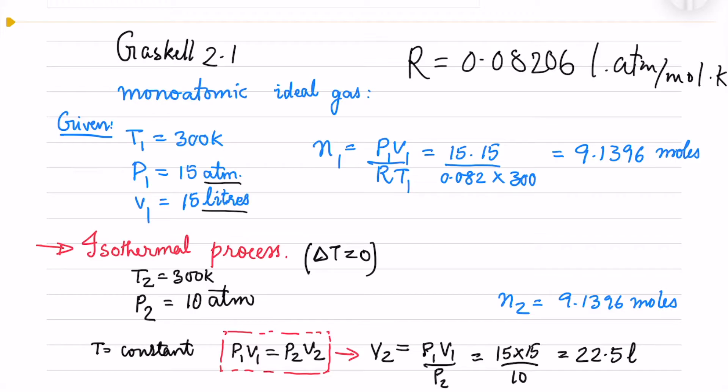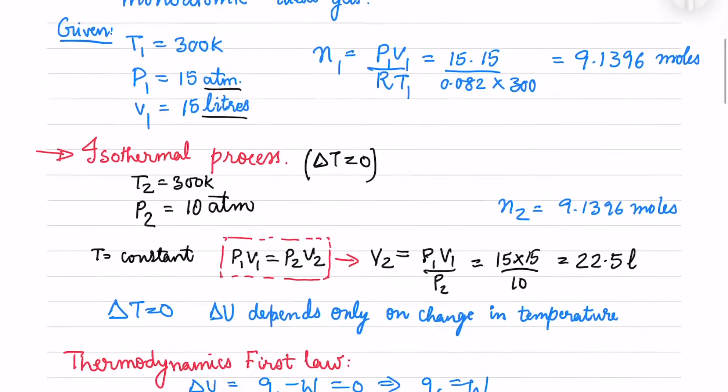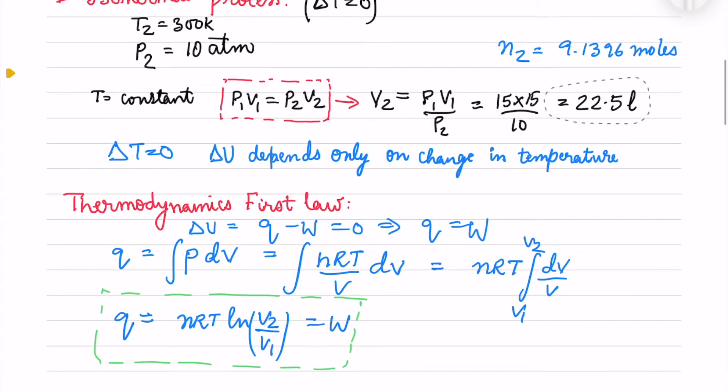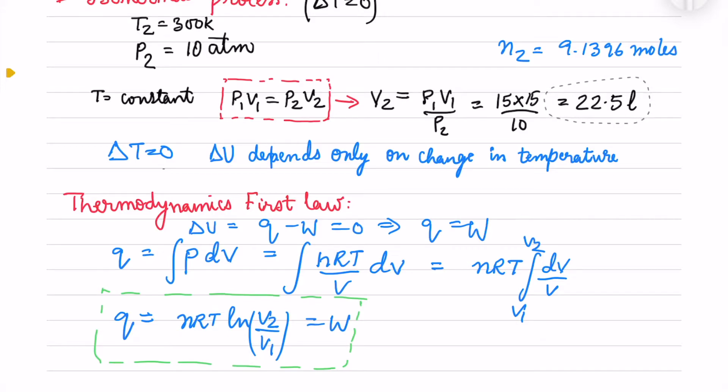For an isothermal process, delta T is 0, so T2 equals 300 Kelvin and P2 equals 10 atmospheres. N2 is the same as the initial process. With temperature constant, P1V1 equals P2V2. From that we get the final volume V2 = 22.5 liters.